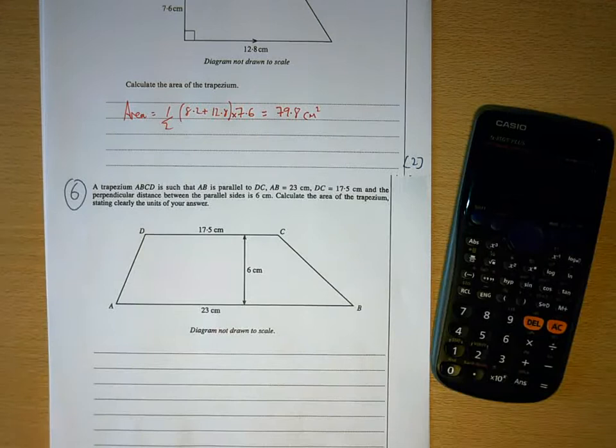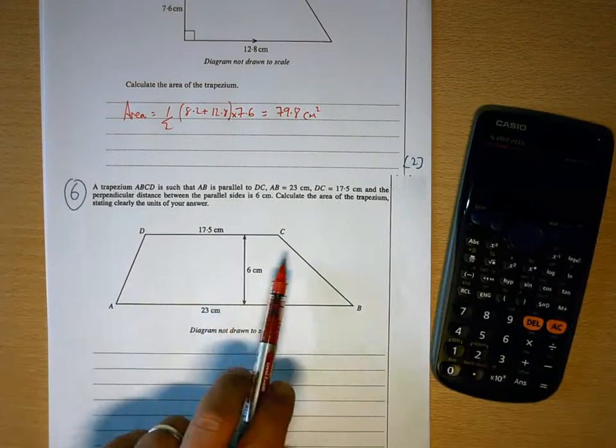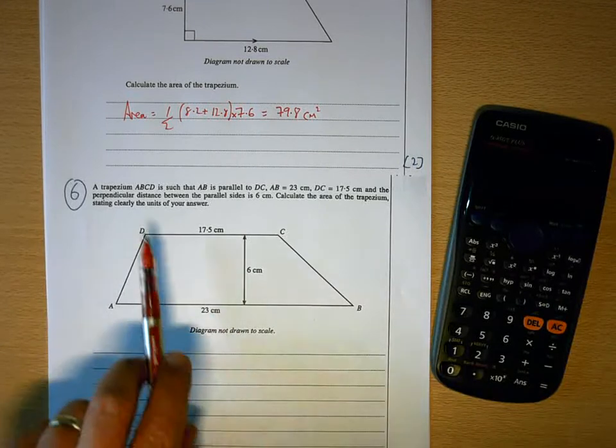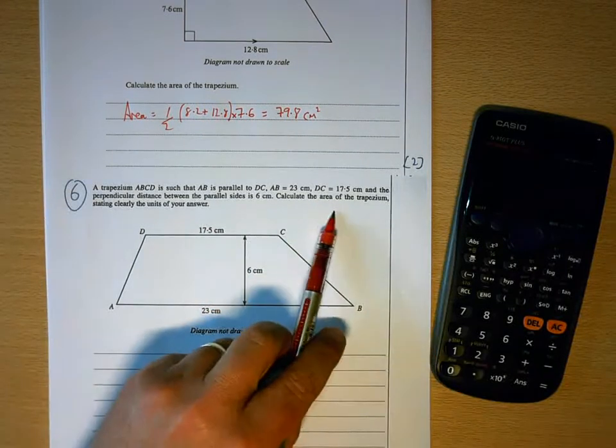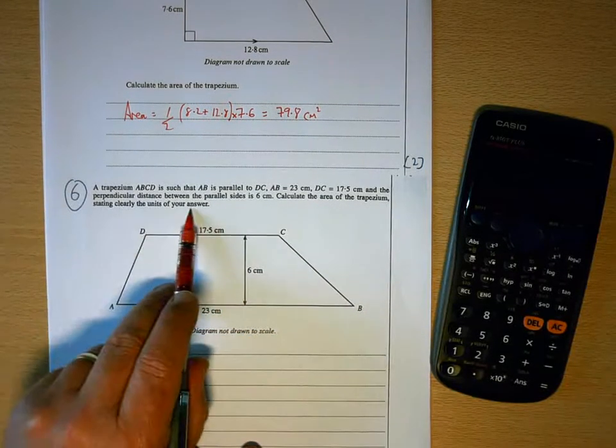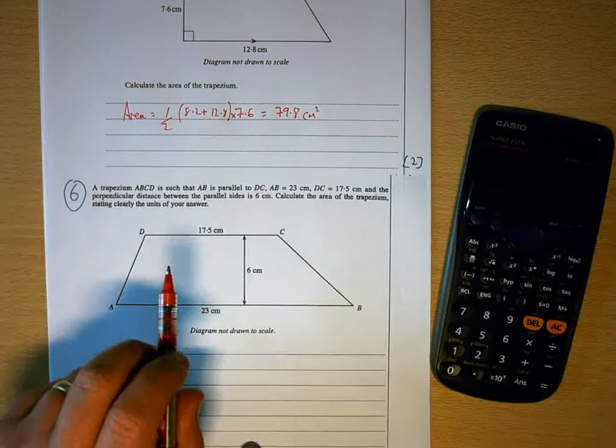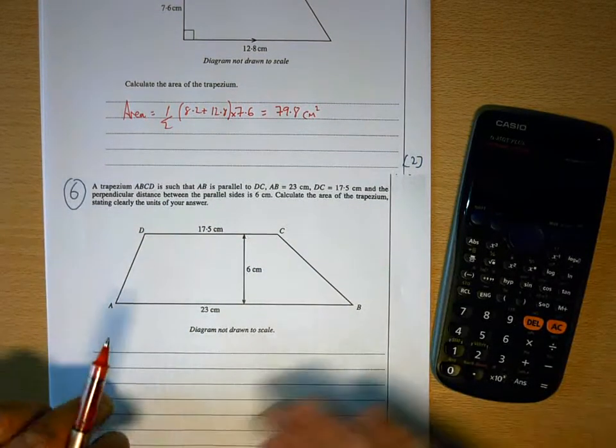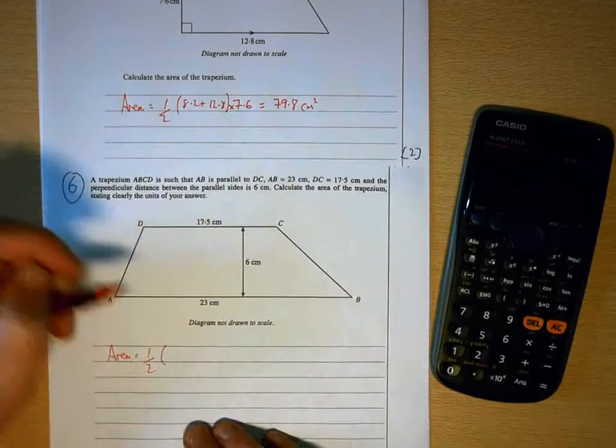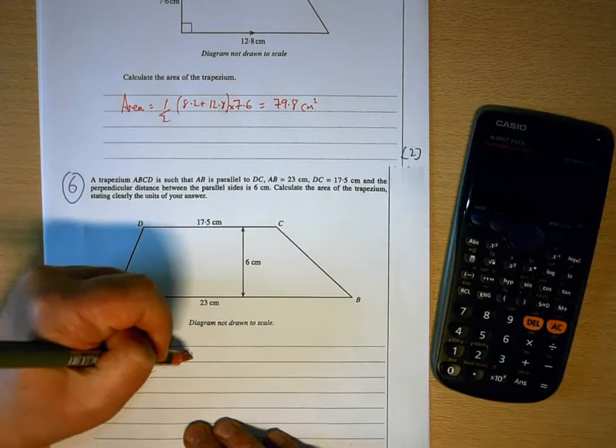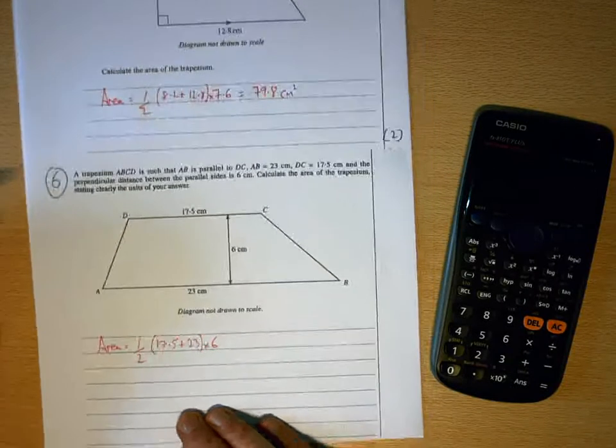So let's take a look at question 6. It's a trapezium. AB is parallel to DC. The distance between them is 6, and we need to find the area of the trapezium. And again, in this question, stating clearly the units of your answer. So if you don't put the units in, you're going to lose a mark. Right, so the area will be a half of 17.5 plus 23, those are your two parallel sides, times 6.